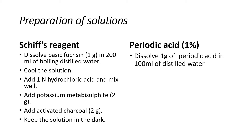Preparation of Schiff solution: First, dissolve one gram of basic fuchsin in boiling distilled water, then cool the solution. Then add one normal hydrochloric acid and potassium metabisulfite. Then add activated charcoal, then keep the solution in the dark. For the preparation of periodic acid solution, dissolve one gram of periodic acid in 100 ml of distilled water.